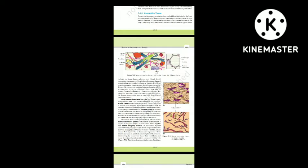These cells also secrete modified polysaccharides which accumulate between cells and fibers and act as matrix or ground substance. Connective tissues are classified into three types: loose connective tissue, dense connective tissue and specialized connective tissue. Loose connective tissue has cells and fibers loosely arranged in a semi-fluid ground substance — for example, areolar tissue present beneath the skin. It serves as a support framework for epithelium and contains fibroblasts, macrophages and mast cells.